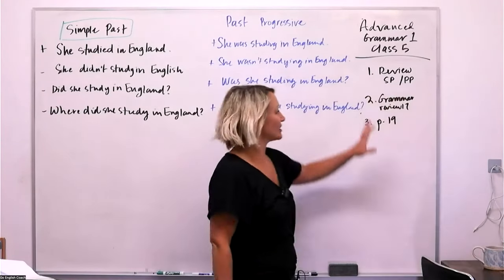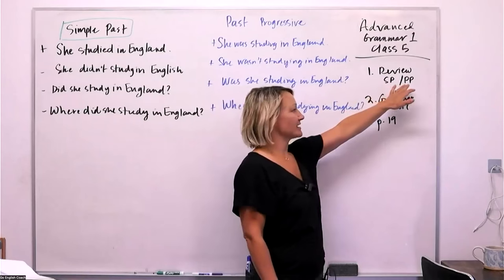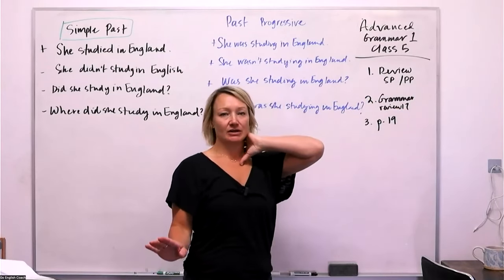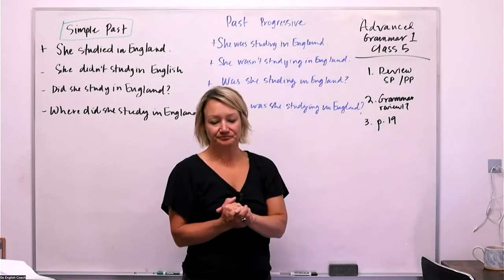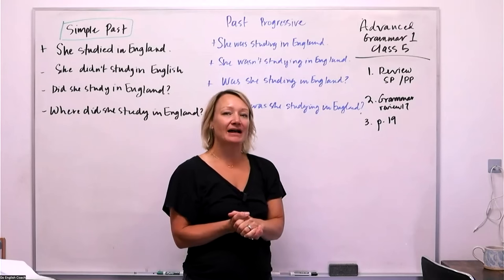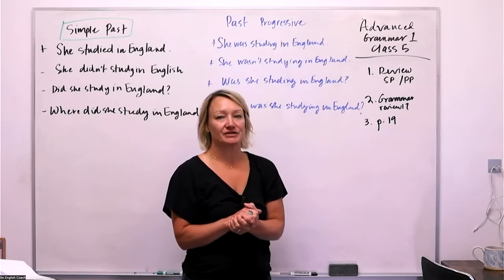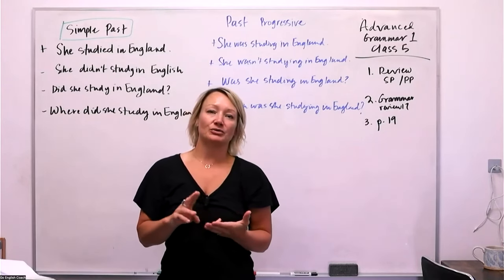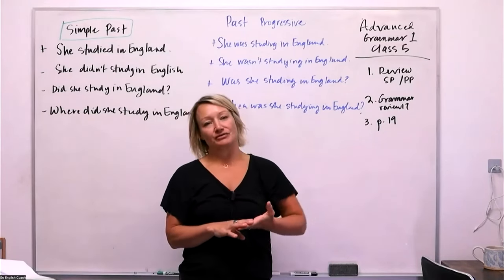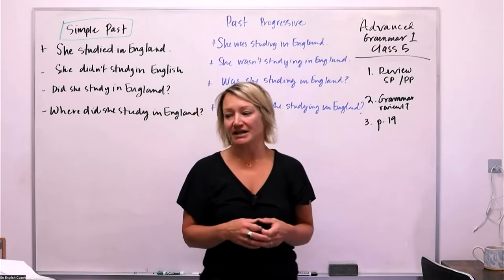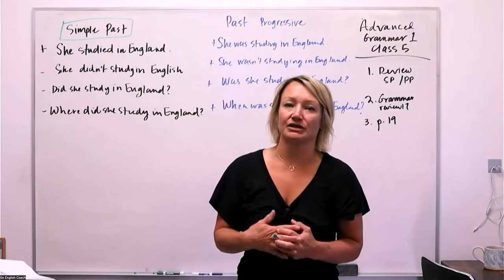I've got first on our list, we've got a review of simple past and past progressive. Another thing that we looked at in our last class was the long list of past irregular verbs. We looked at maybe the most common ones, be, go, do, have, come, those are kind of like the top five, there's a top 10 of the ones that you should really know.